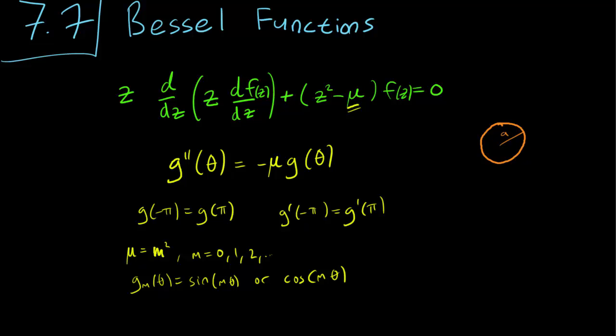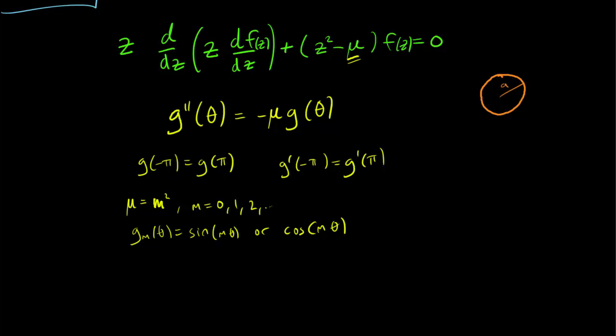This means that we can rewrite our equation, replacing our mu with m-squared. Also, let's use the product rule on this term.